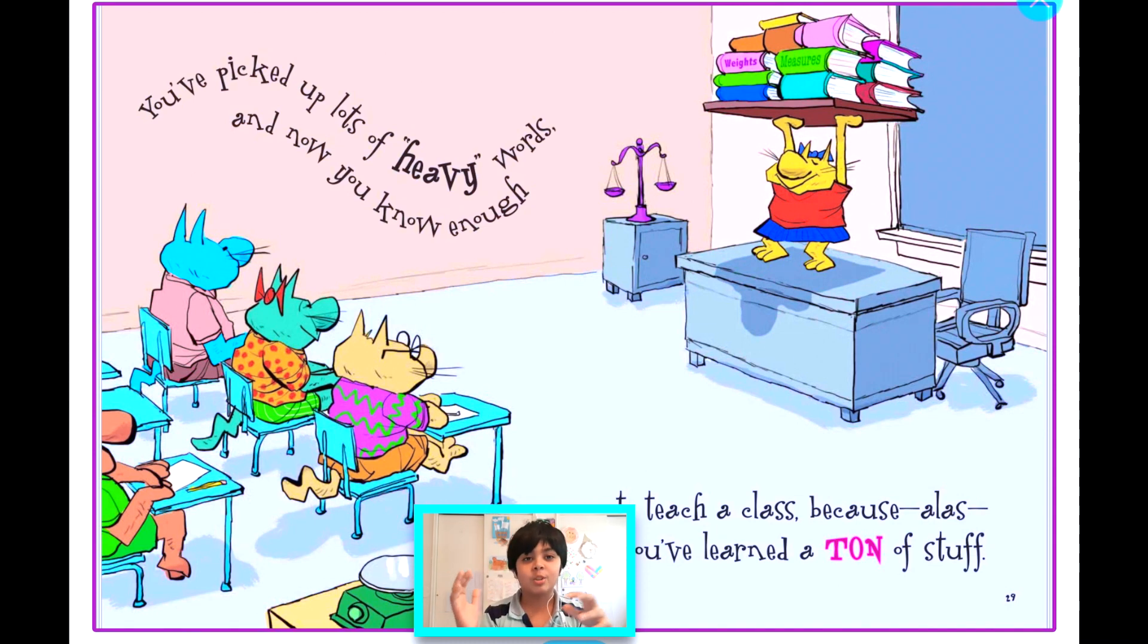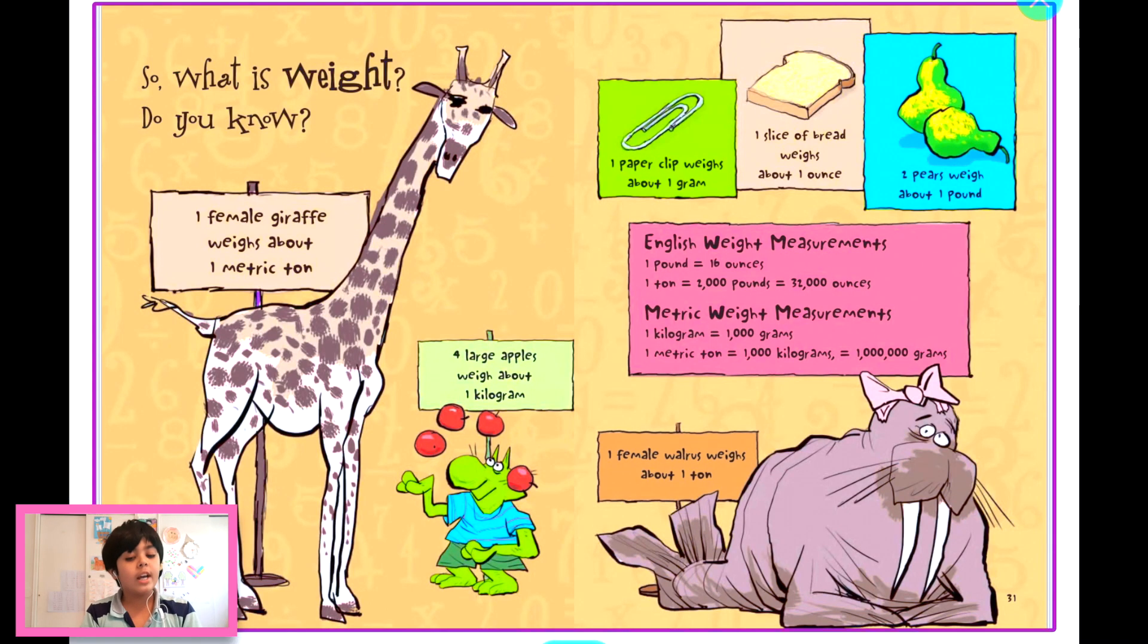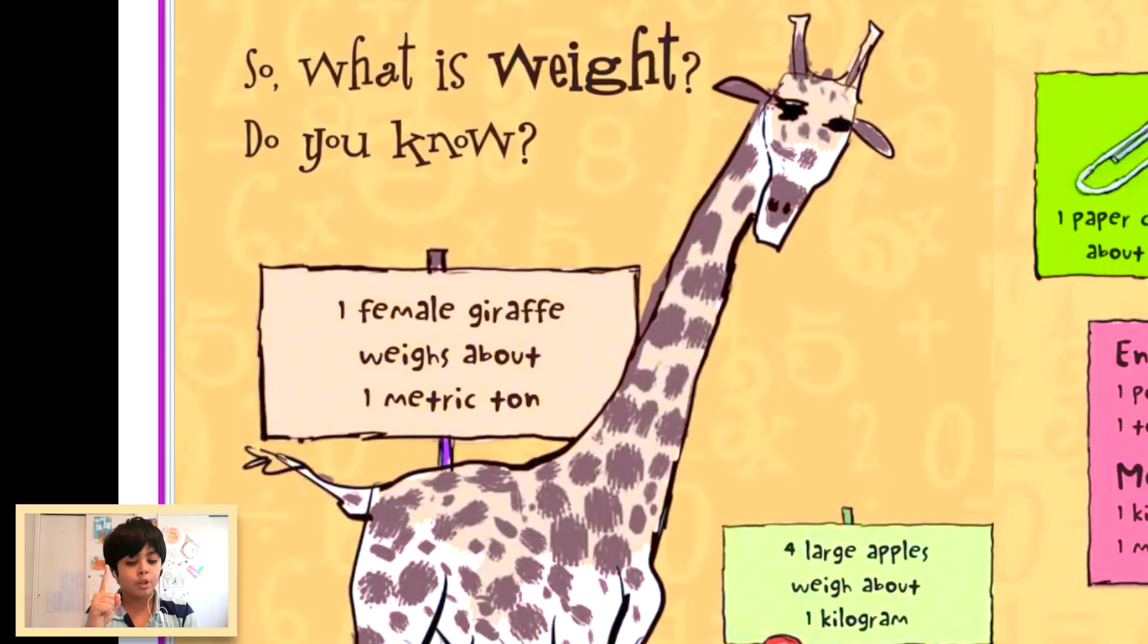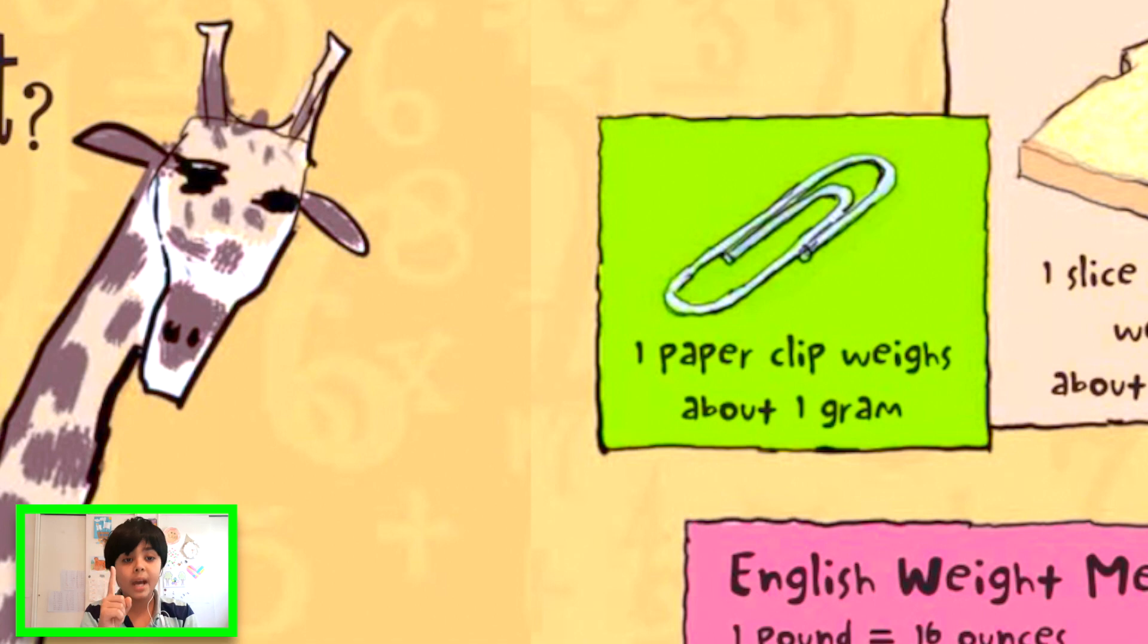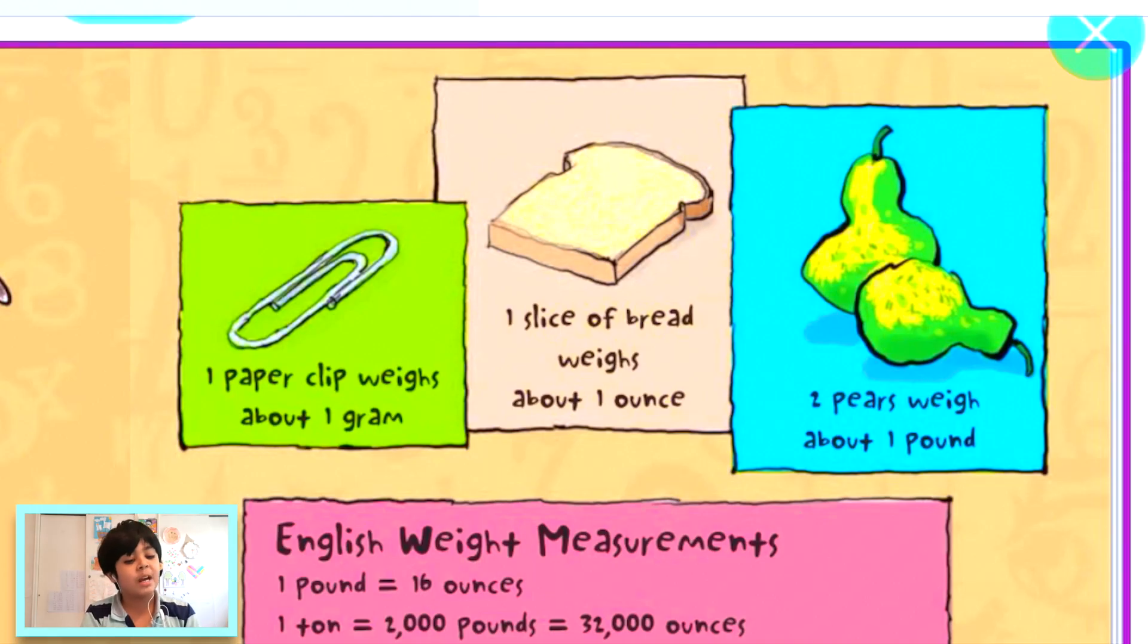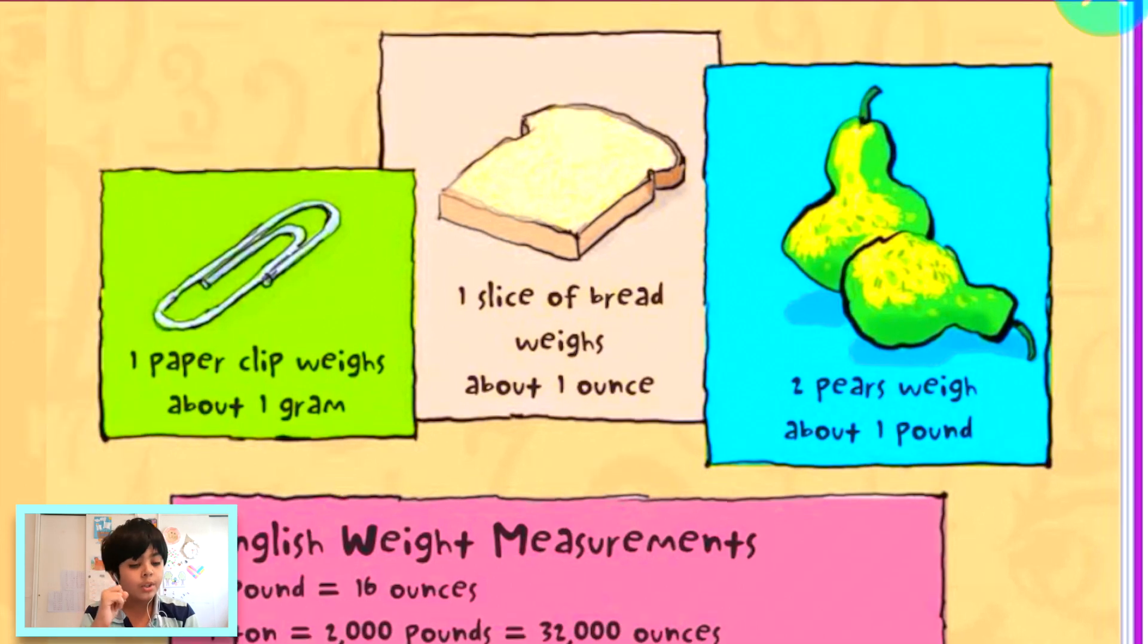So what is weight? Do you know? It's talking about: one female giraffe weighs about one metric ton, four large apples weigh about one kilogram, one paper clip weighs about one gram, one slice of bread weighs about one ounce, two pears weigh about one pound, and a female walrus weighs about one ton.